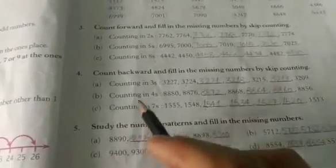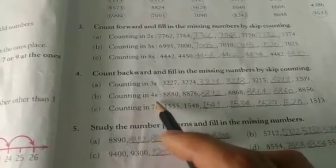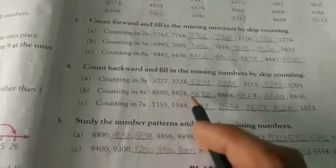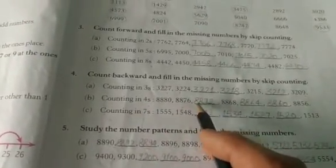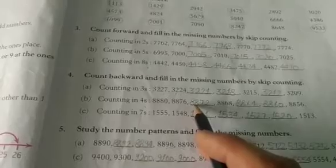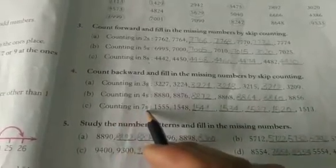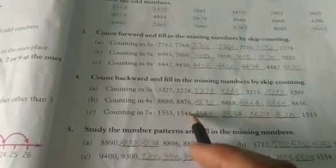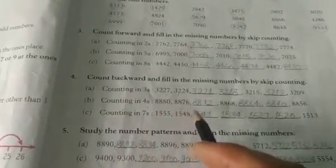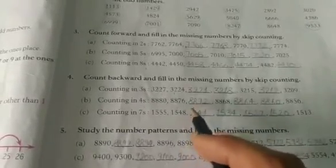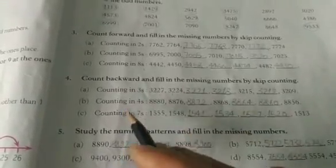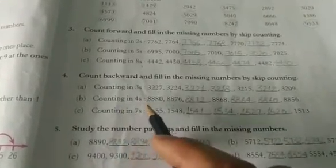Next, counting in 4s means you skip 4 numbers and write the backward counting. Next, counting in 7s — skip 7 numbers and write the backward counting. Parts A, B, and C — these two lines you will try on your own at home.